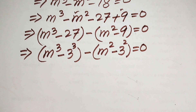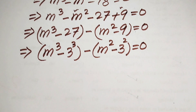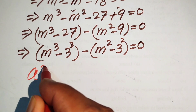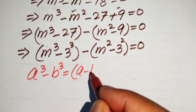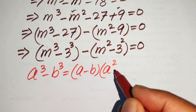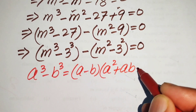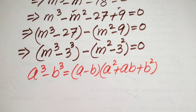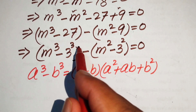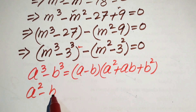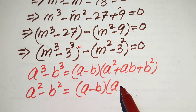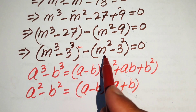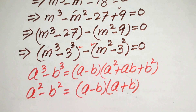We need two formulas: the cubic formula and the square formula. We know that a cubed minus b cubed equals a minus b times of a squared plus ab plus b squared. We also know that a squared minus b squared equals a minus b times of a plus b. We apply the cubic formula to the first factor and the square formula to the second factor.